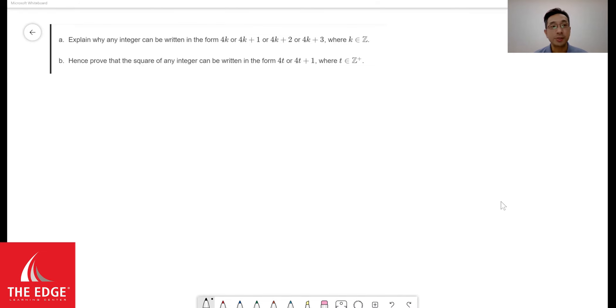First part asks us to explain why any integer can be written in the form 4k or 4k plus 1 or 4k plus 2 or 4k plus 3, where k is an integer. So the first thing that comes to our mind is that they're not asking us to show anything other than to just explain. So what that means is we just need to hit some keywords.